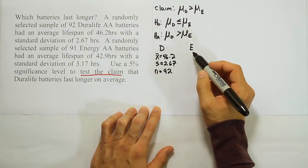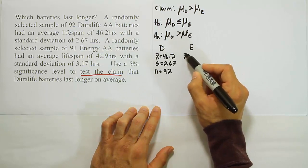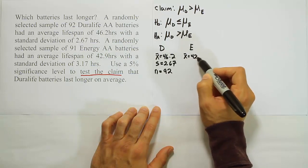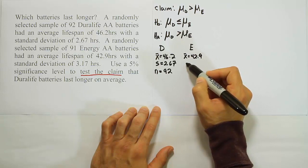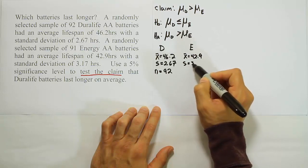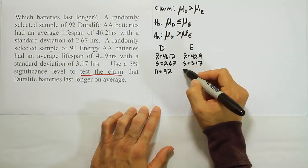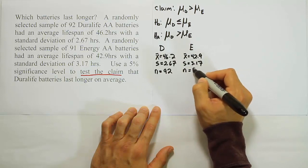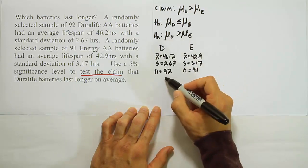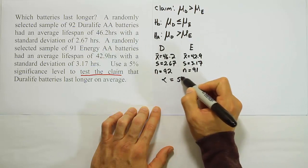And for the energy batteries we have x-bar which is 42.9. We have standard deviation of 3.17. And then finally we have an n of 91. And then lastly let's just write down that alpha is 5%.